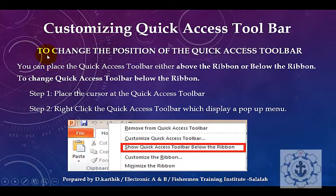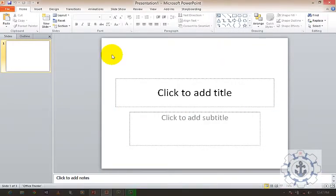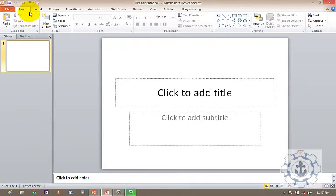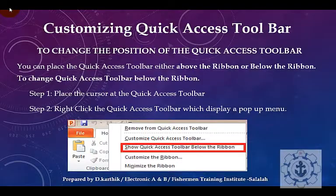The next topic is how to change the position of the Quick Access Toolbar. Here you can see the Quick Access Toolbar is located at the top, above the ribbon. This position can be changed. I will teach you how. Step 1: